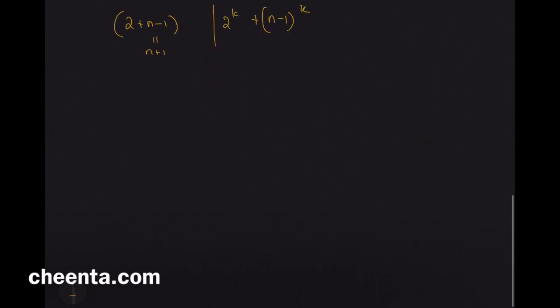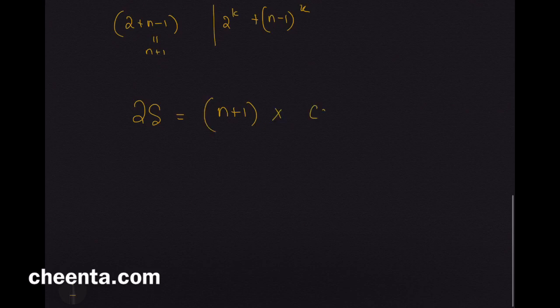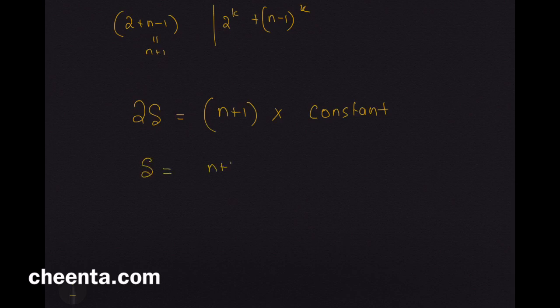So, we have 2 times S is equal to n plus 1 times some constant, whatever the stuff is inside the parentheses, those will all add up. So, S is equal to n plus 1 divided by 2 times some constant. Now, it will really depend if S is even or if S is odd.